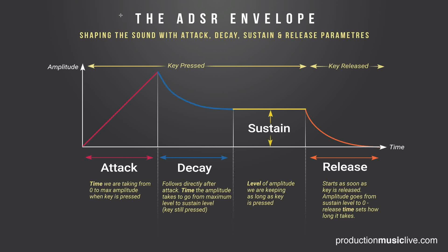Let's take a quick general look at the ADSR envelope. We are shaping our sound with attack, decay, sustain, and release parameters. Our sound is measured in amplitude of a certain signal over time — the duration of a song, a couple of seconds, or even milliseconds.